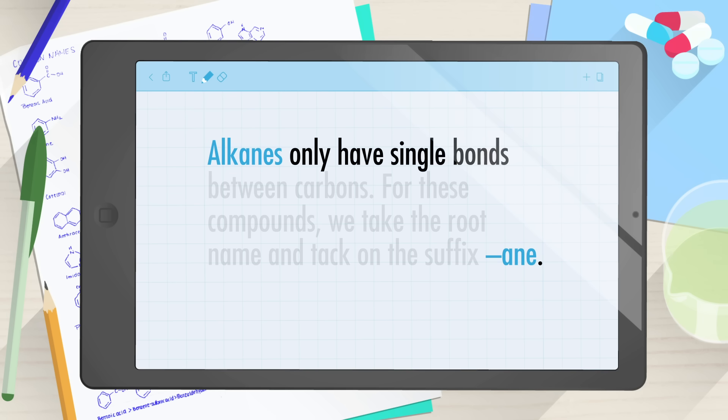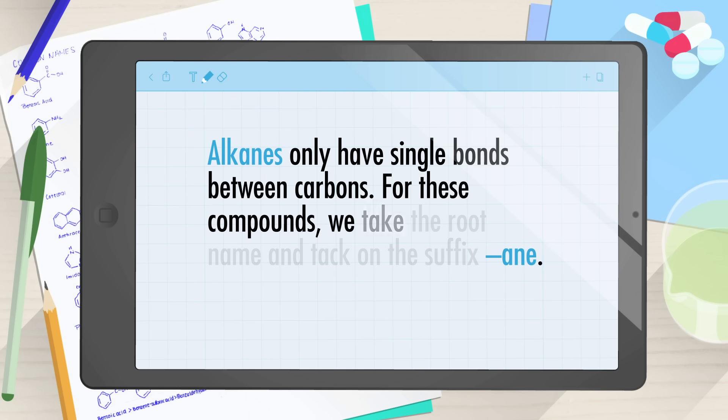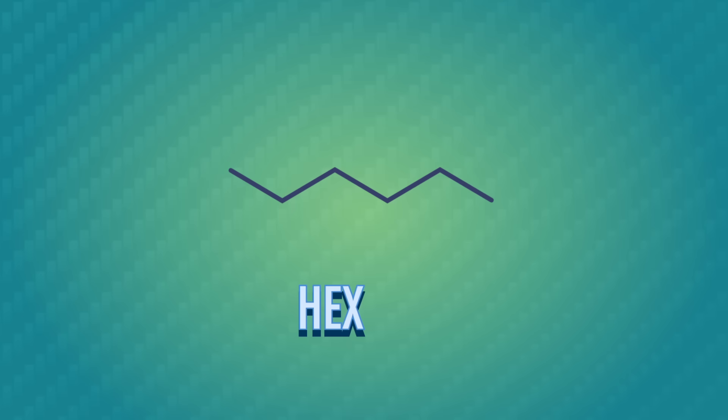Back to our IUPAC rules. Once we've counted our carbons and have a root name, we need to add a suffix to indicate what kind of organic molecule we're dealing with. The simplest organic molecules are hydrocarbons, which only have hydrogen and carbon atoms. There are four kinds of hydrocarbons: alkanes, alkenes, alkynes, and aromatics. But we'll only talk about the first three for now, because smelly aromatic compounds are a little more complicated. Alkanes only have single bonds between carbons. For these compounds, we take the root name and tack on a suffix "-ane". For example, this skeletal structure is a six-carbon chain, so the root is hex. And because there are only single bonds, it's an alkane, and we add the suffix "-ane". It's hexane! Alkanes are kind of boring compared to their hydrocarbon cousins — they're low-energy couch potatoes and don't interact with many other compounds.